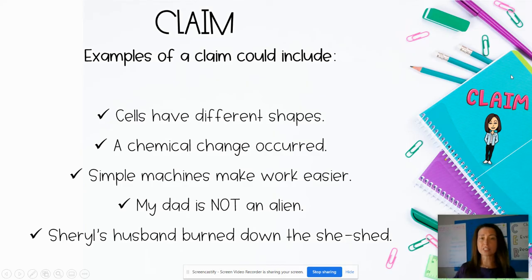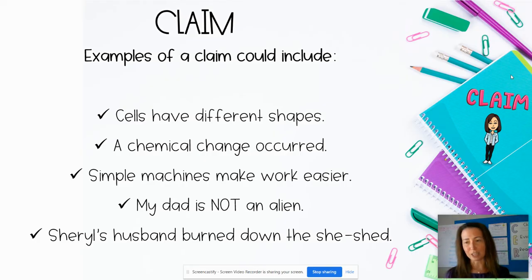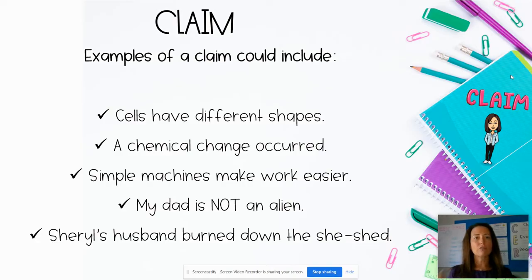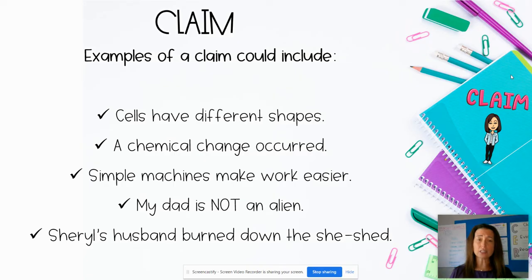Other examples of a claim would be: a chemical change occurred, simple machines make work easier, my dad is not an alien, and Cheryl's husband burned down the she shed — I'll explain those last two a little later. What I like about this method is it's not specific to just science. For those of you also teaching ELA, this works wonderfully in that area as well, especially for students who have to write argument essays.